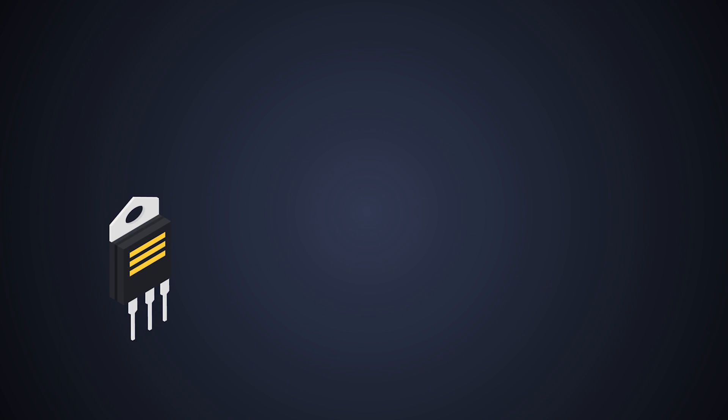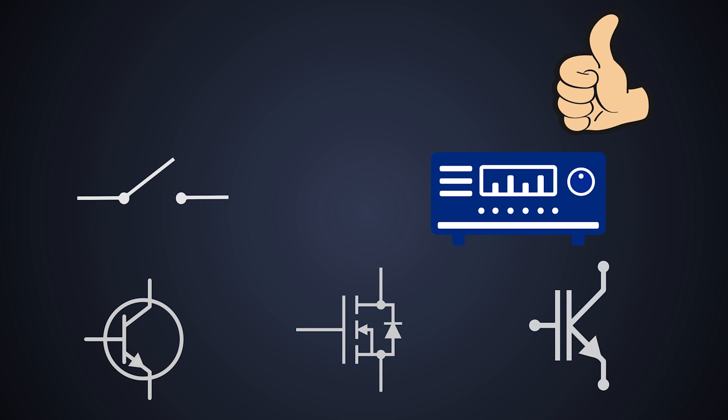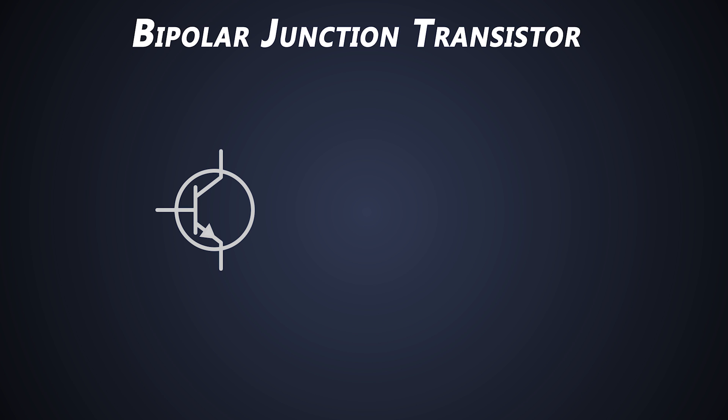Transistors are very important. Some people say it was one of the most important inventions in the 20th century. And these transistors can be used as switch or an amplifier. There are different types of transistors like BJT, MOSFET, IGBT and so on. Every transistor serves the same purpose but each has its own advantages and disadvantages. We will start with BJT, which is a bipolar junction transistor.